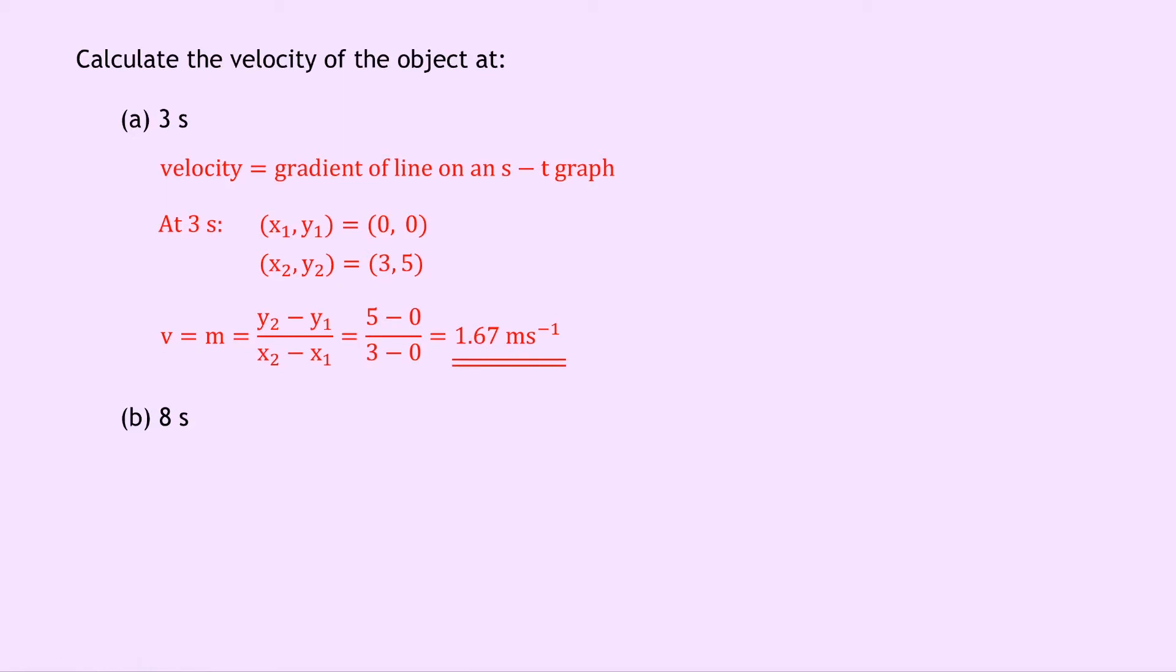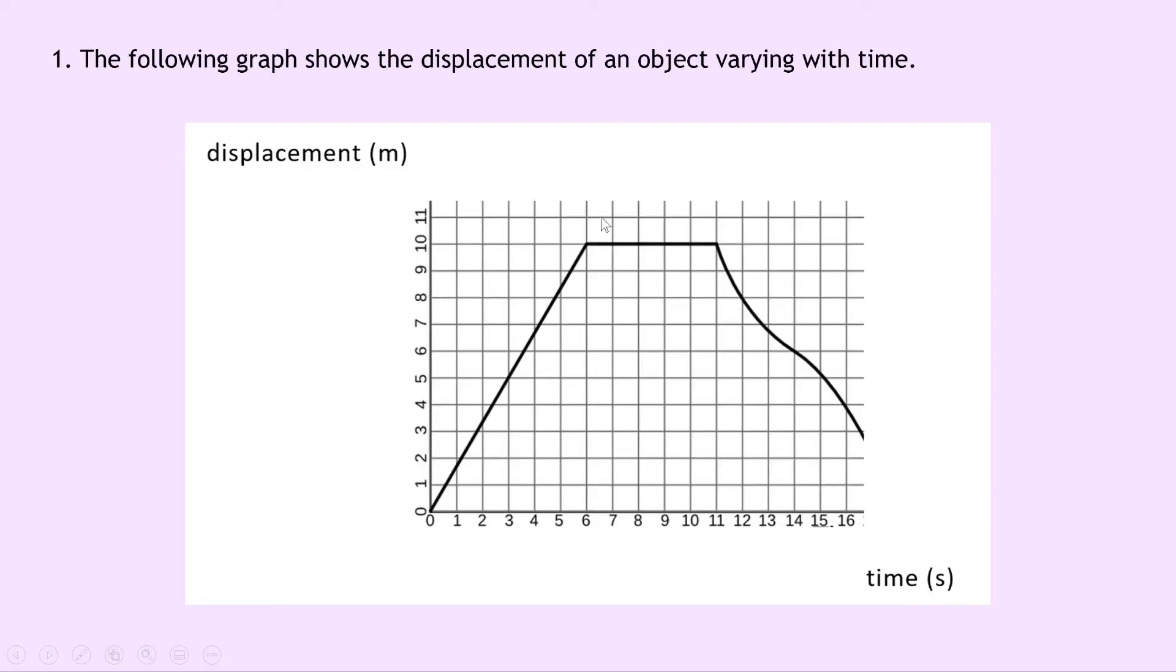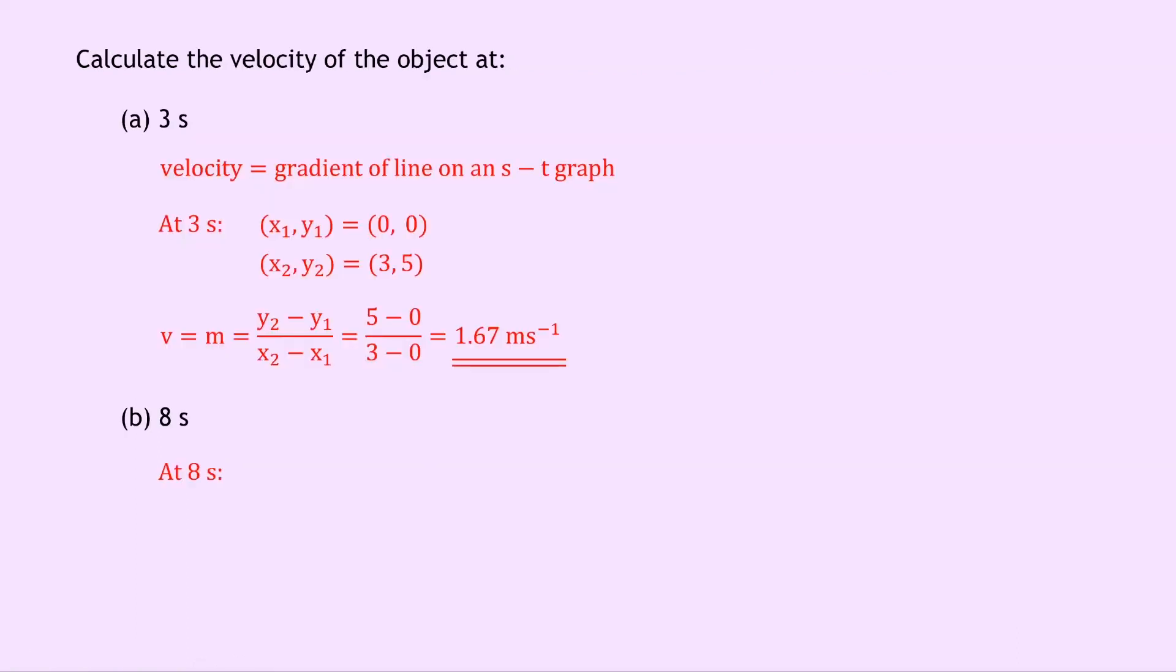Part B says to calculate the velocity of the object at 8 seconds. So if we look back at the graph, here's 8 seconds over here, and you'll see that at 8 seconds we've got a straight horizontal line. So that means that the displacement is constant, it's not changing. So the velocity must be 0, because if the velocity is the gradient and the gradient is 0, then velocity must also be 0. At 8 seconds the gradient m equals 0, and therefore the velocity equals 0 meters per second.